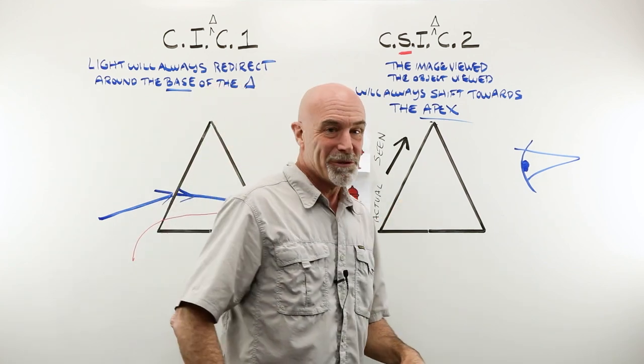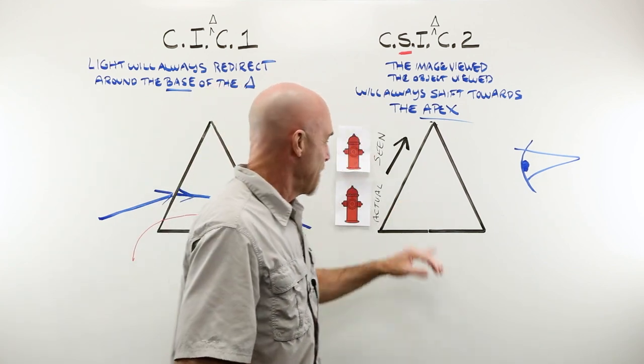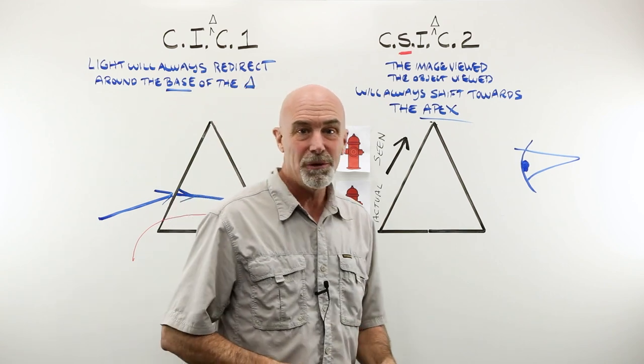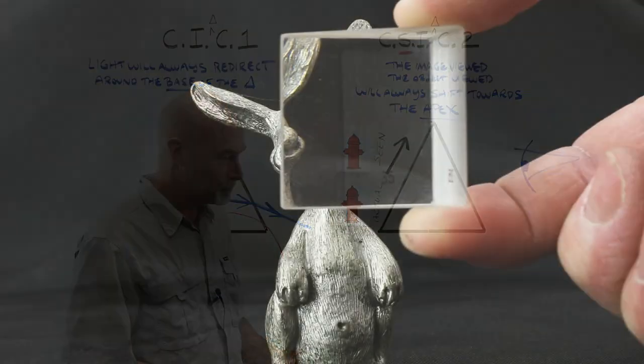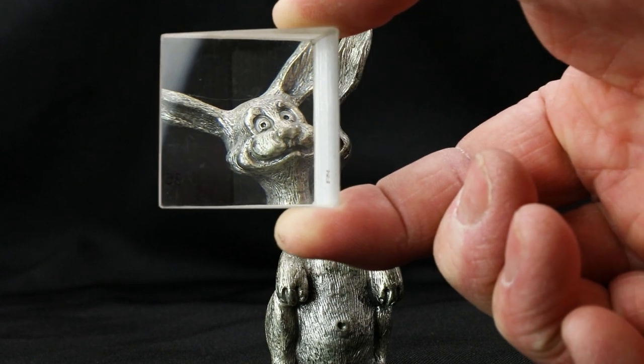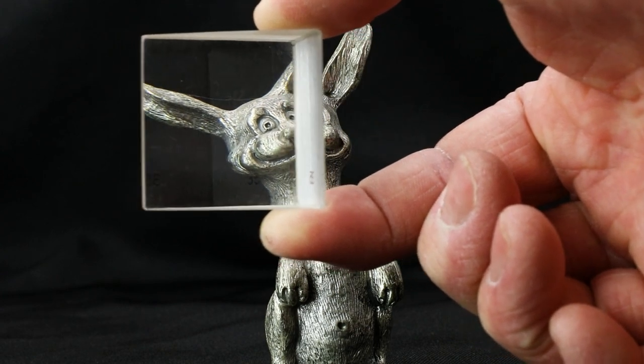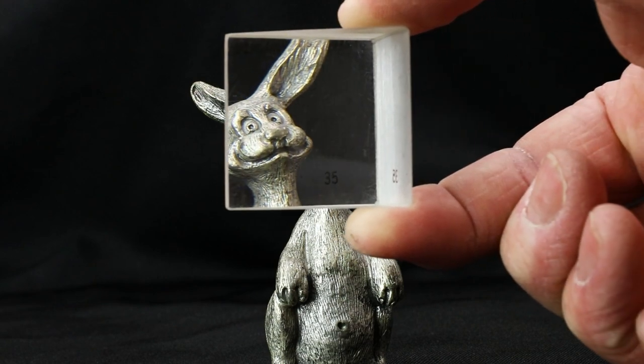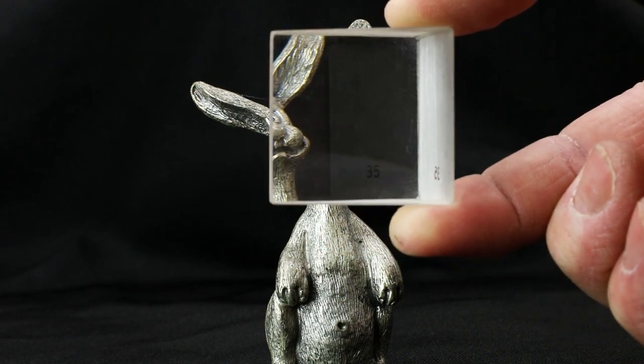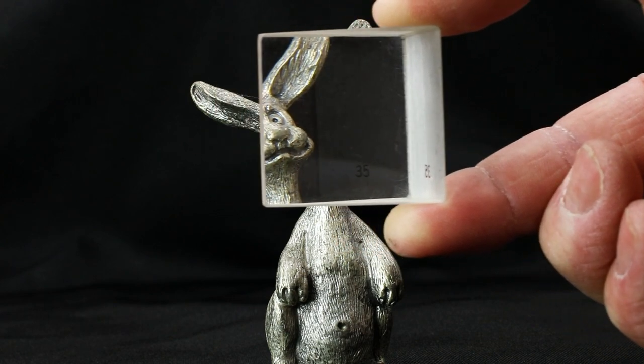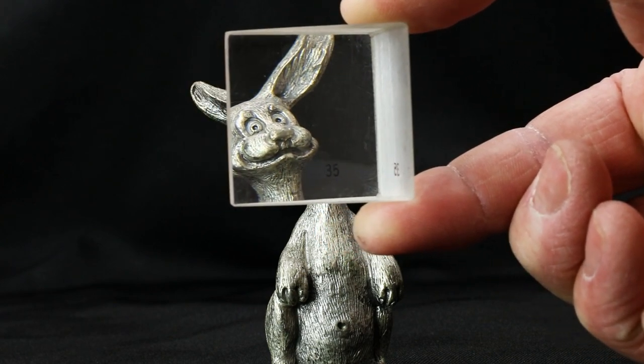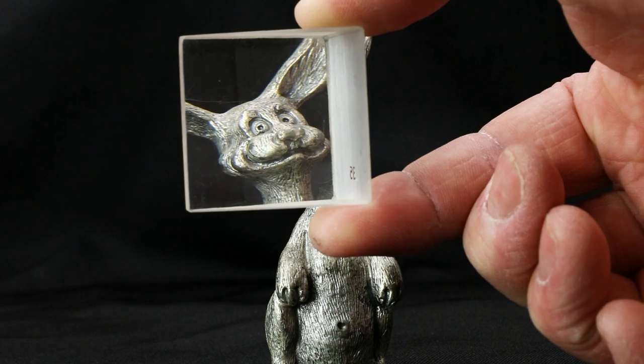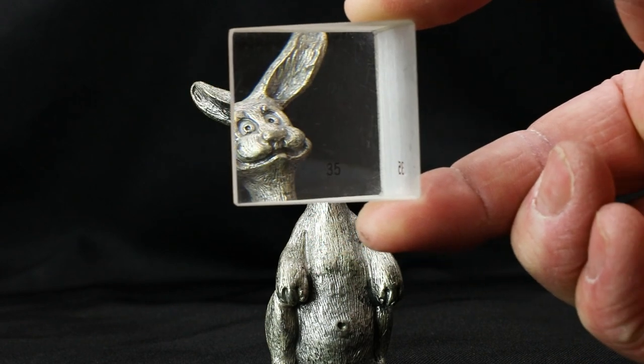Let's head over to the bench and allow my training center assistant to give you another view of that. That is a 35 diopter prism held in front of my assistant there, and as you can see, it's a pretty dramatic shift of that image being viewed, the object being viewed shifted towards the apex of that prism.